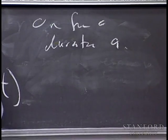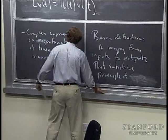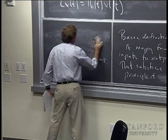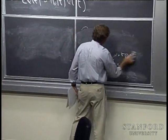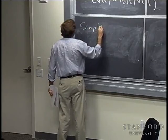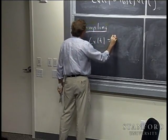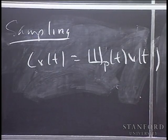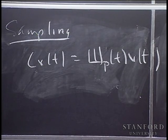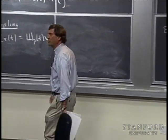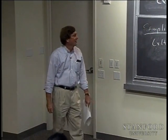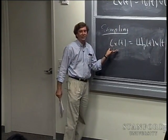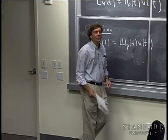Somebody could ask: is it true that the sample of the sum of two functions is the sum of the sampled functions? That must be true because sampling is a linear operation — it's a linear system. It's multiplication; it's direct proportion. The sample of the sum is the sum of the sampled functions, which follows directly from linearity.